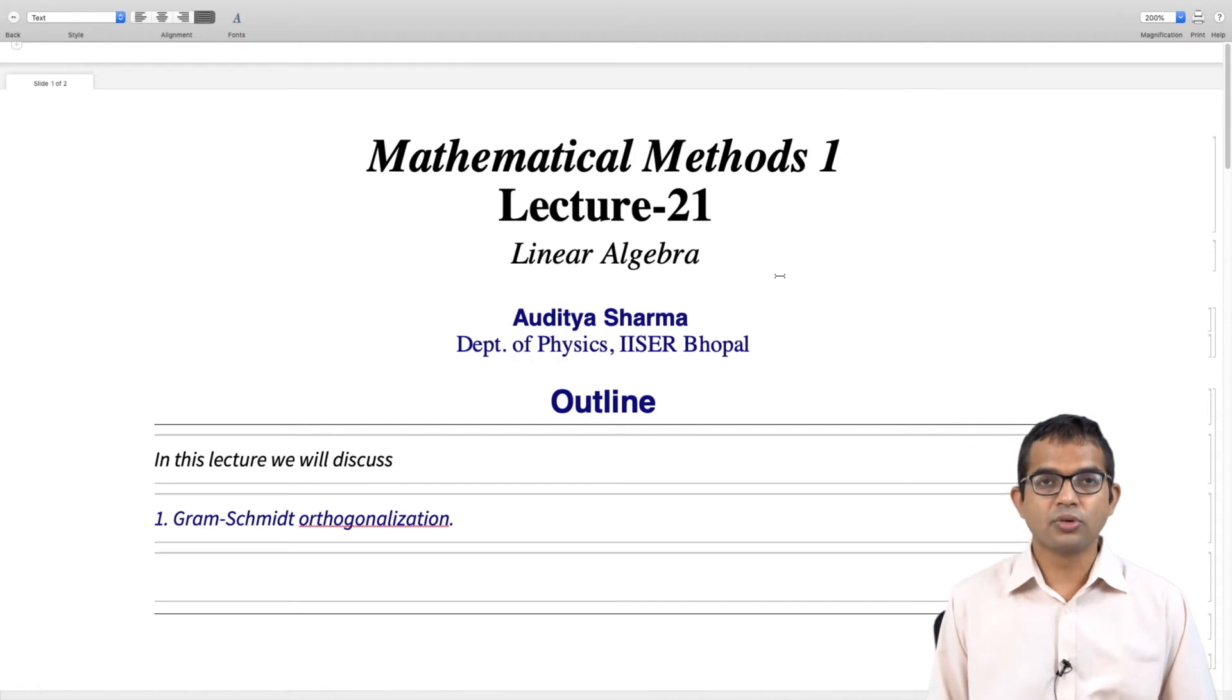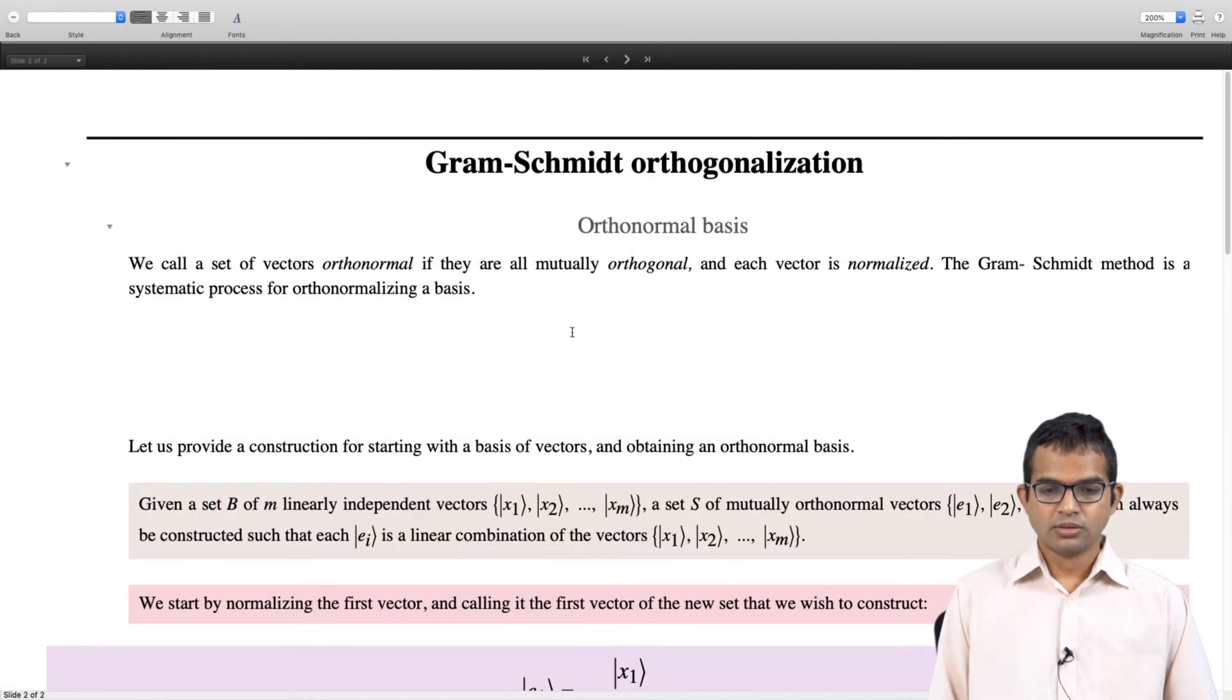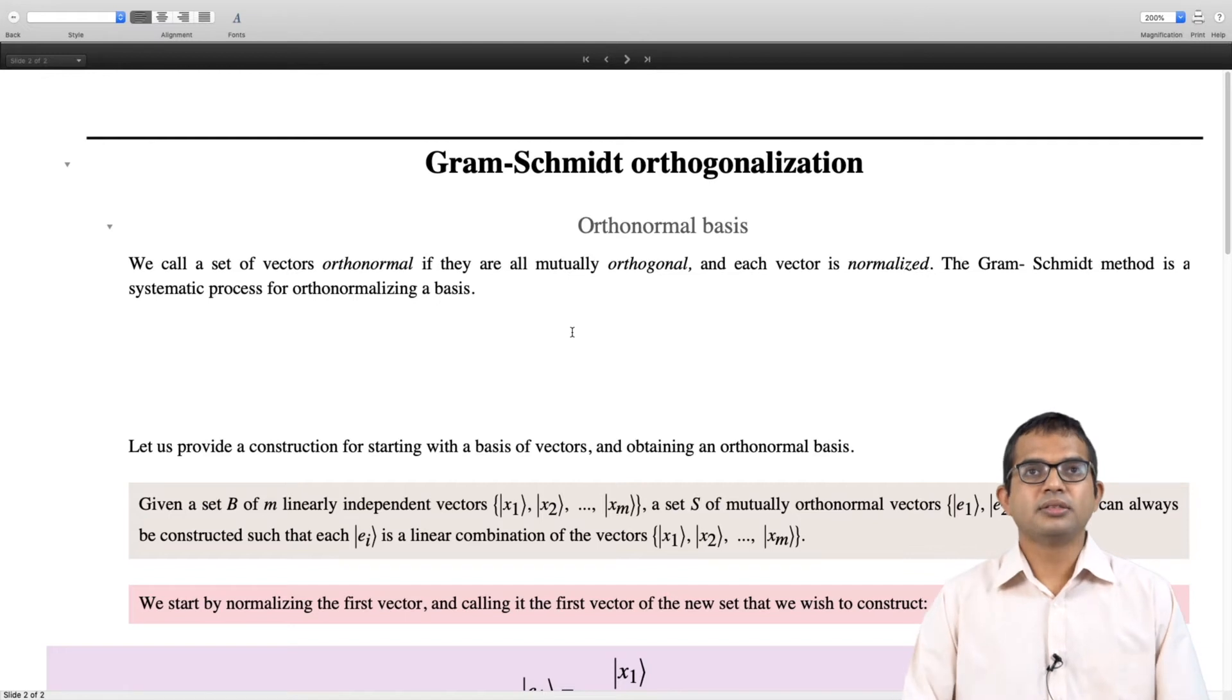In this lecture I am going to describe a systematic method by which you can start with a basis of any kind and extract an orthonormal basis from this. This is called the Gram-Schmidt orthogonalization process. We call a set of vectors orthonormal if they are all mutually orthogonal to each other and each vector is normalized.